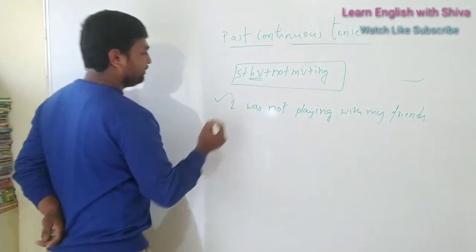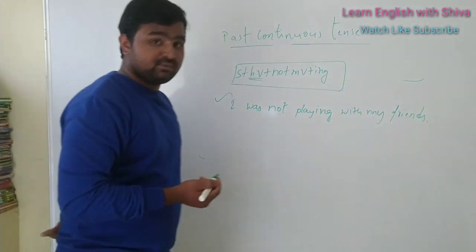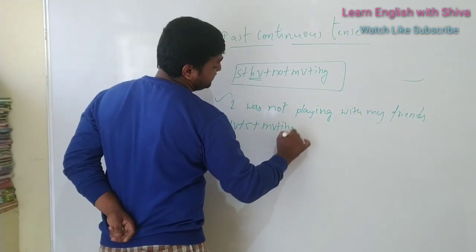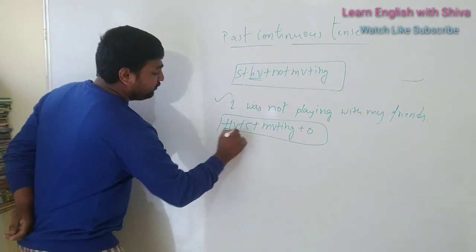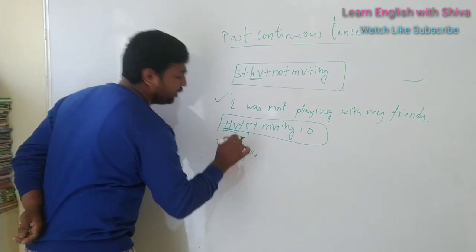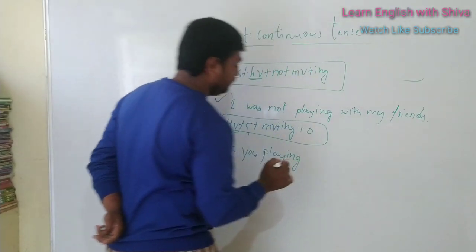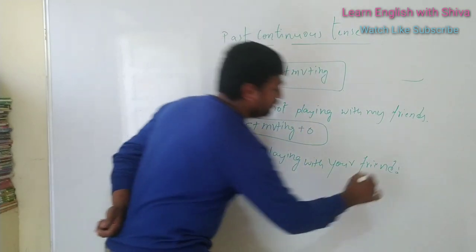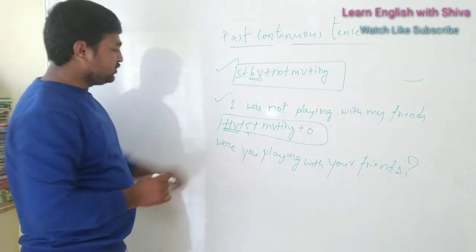For the interrogative structure, we frame it as: Helping verb + subject + main verb + suffix '-ing' + object. If we take 'you' as the subject, the helping word is 'were.' So: Were you playing? Were you playing with your friends? Were you playing with your friends yesterday when I called you? This is the interrogative structure.